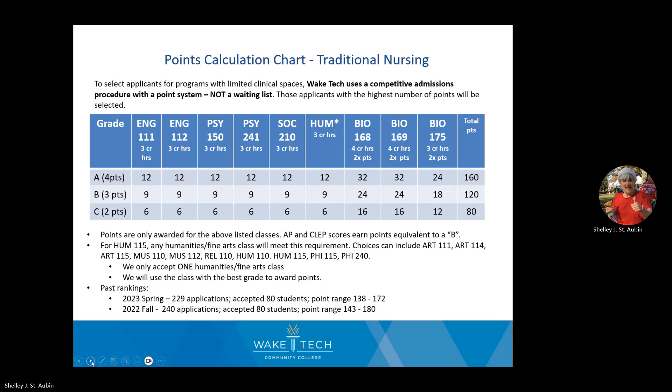The nursing program has a humanities elective — it's called an elective not because you can skip it, but because you can choose which humanities or fine arts course to take: art, music, religion, humanities, and several other options. Check with an advisor to make sure your choice meets requirements. We will accept only one humanities course for points, and we will use the points from the class with the highest grade.